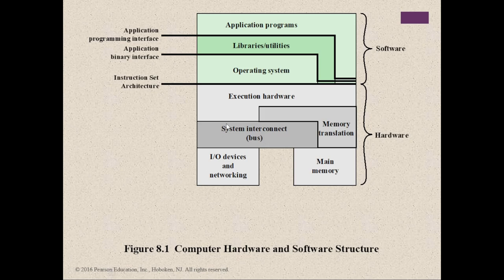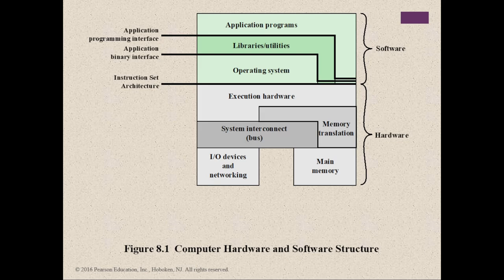As shown in Figure 8.1, the user only accesses the application programs and does not concern themselves with what happens between the libraries, utilities, and the operating system. The user can also access the OS through its user interface, but the execution hardware, system interconnect, memory translation, I/O devices, networking, and main memory are not the user's concern. What matters is that the application programs run according to their needs.